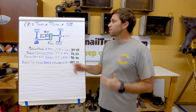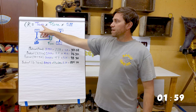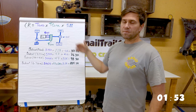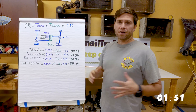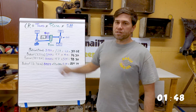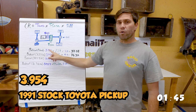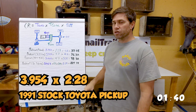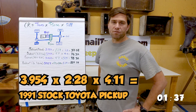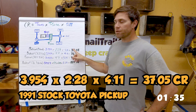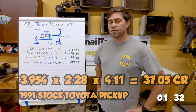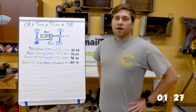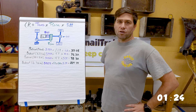The equation is pretty simple. Your crawl ratio is your transmission times your t-case times your differential. If Bobcat were stock, it'd be a 1991 Toyota pickup. The first gear in the transmission is a 3.954. Stock gears in the t-case is 2.28, and stock gears in the differential is 4.11. So when you multiply all those up, you end up with 37.05. What does that mean? For every 37.05 turns of your flywheel, your tires are going to turn once.